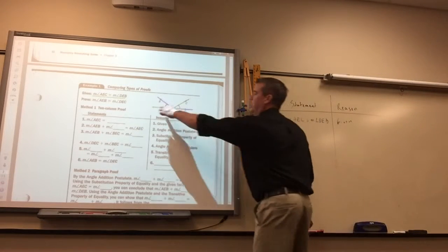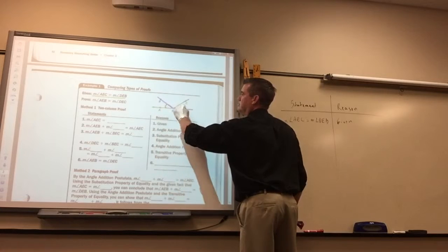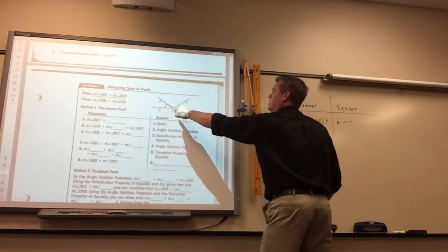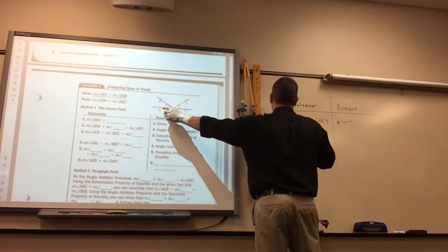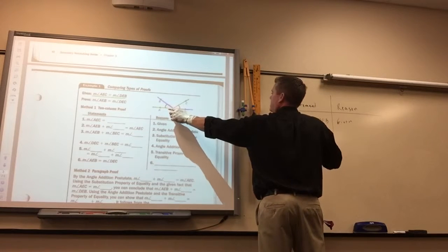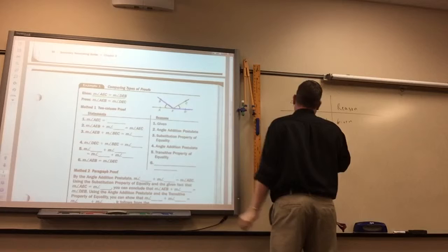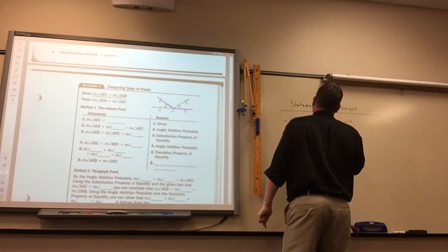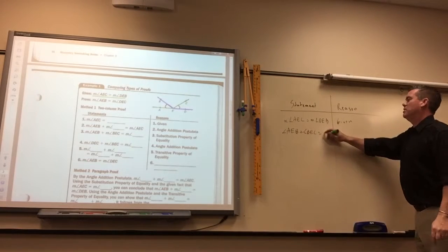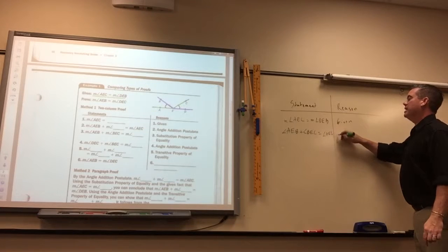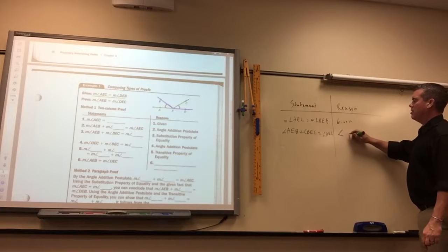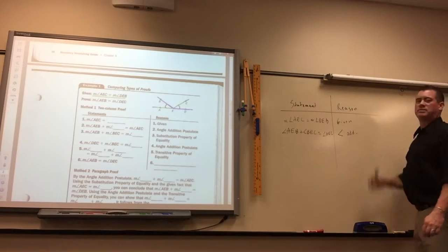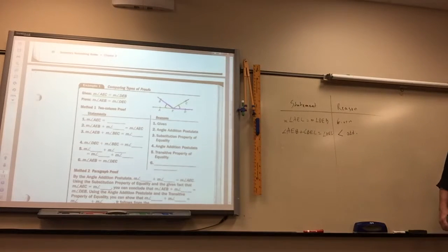Now, I know that this green angle here, AEC, right there, is formed by two angles together. Angle AEB plus angle BEC equals the whole angle, AEC. That is just, again, you can abbreviate, angle addition. You add two angles together, you get a bigger angle.